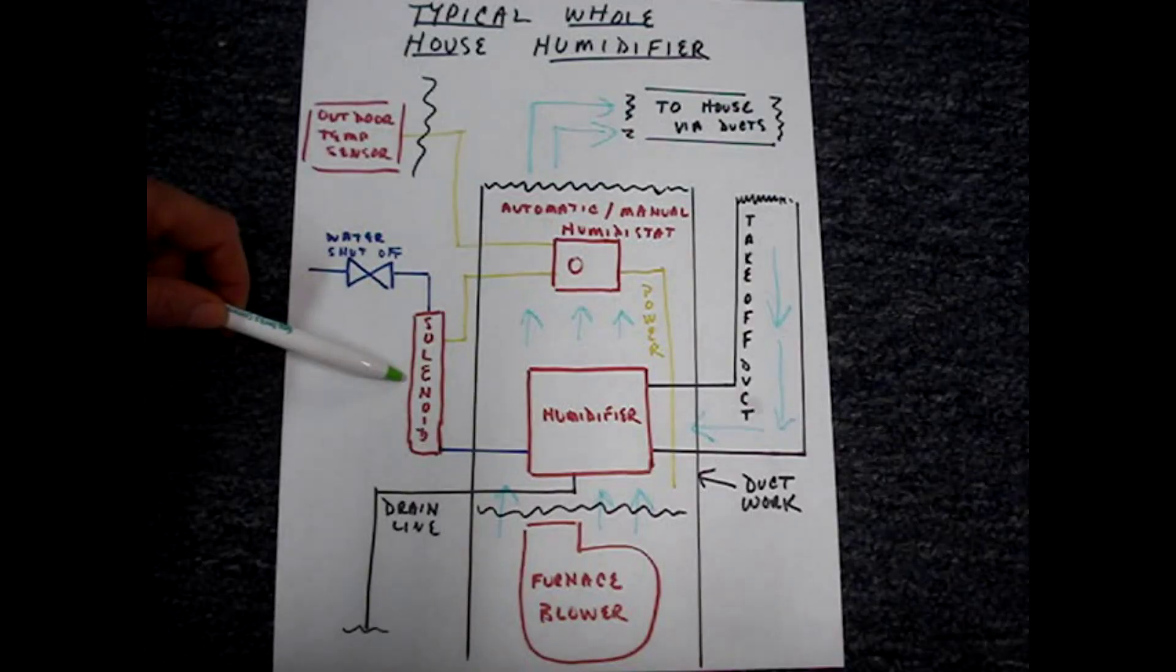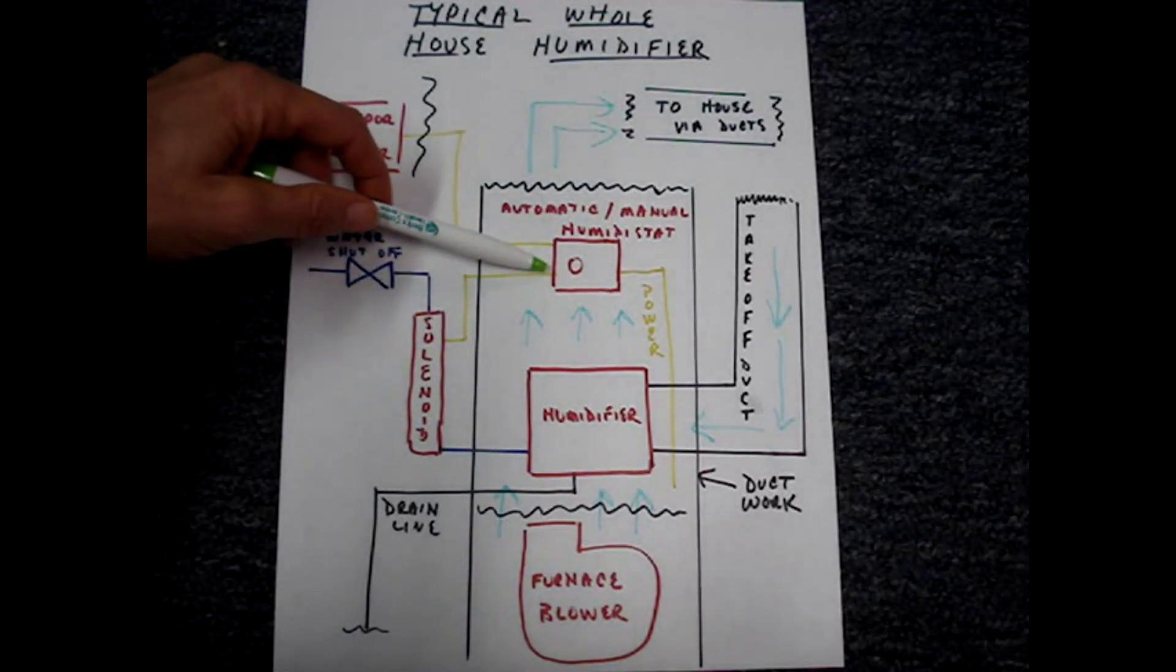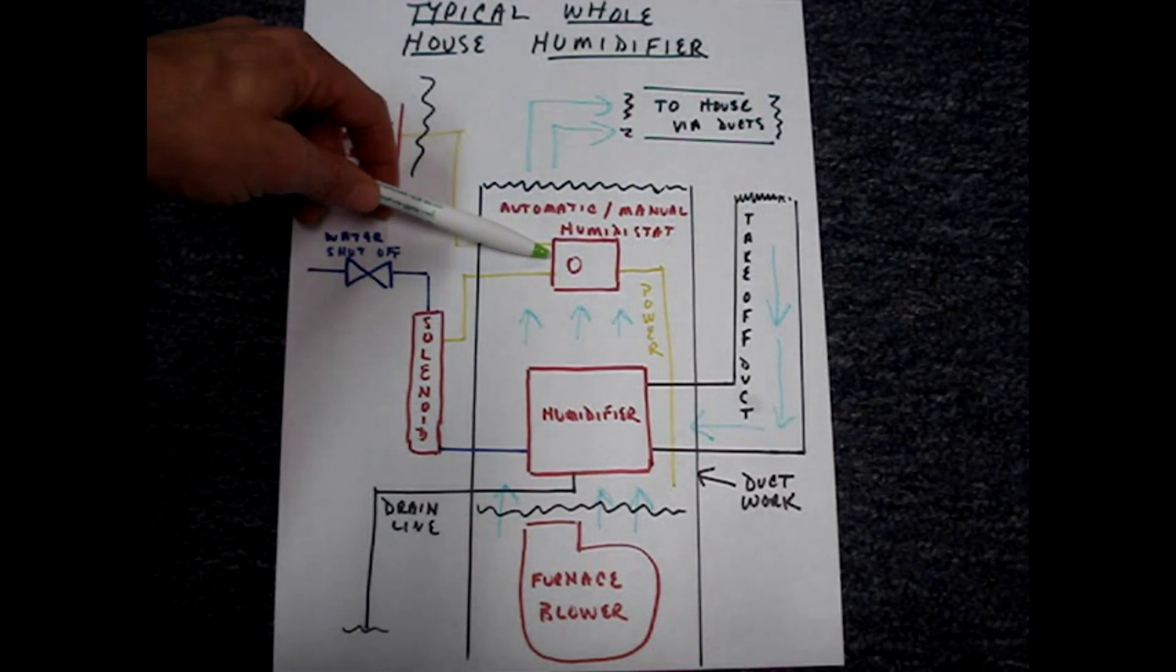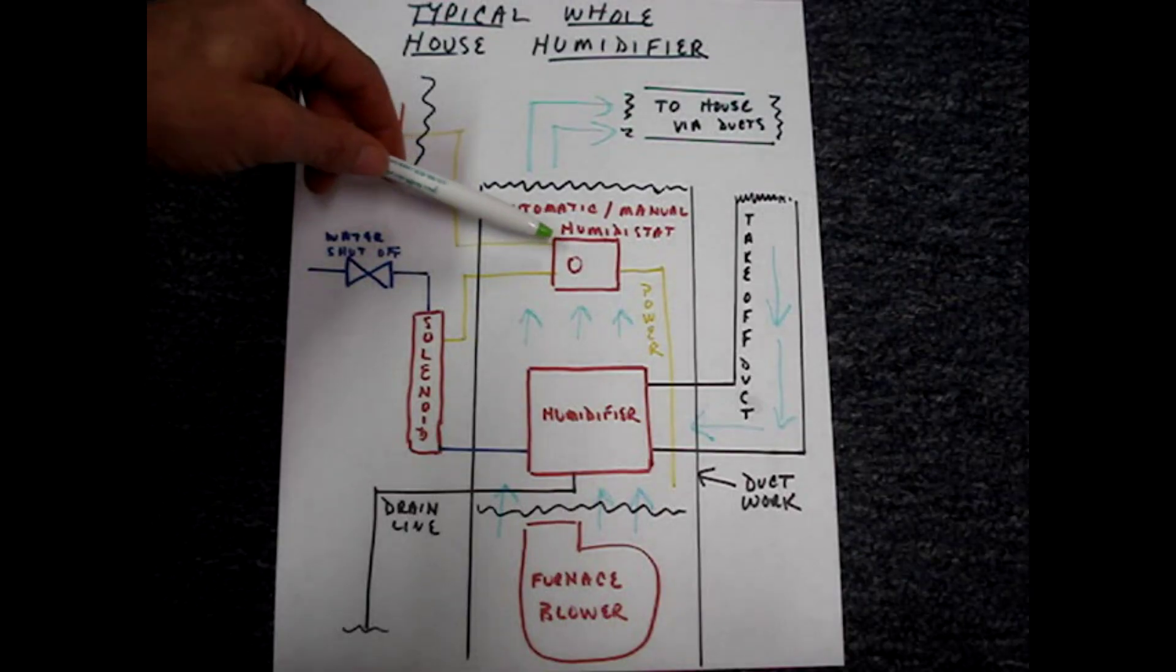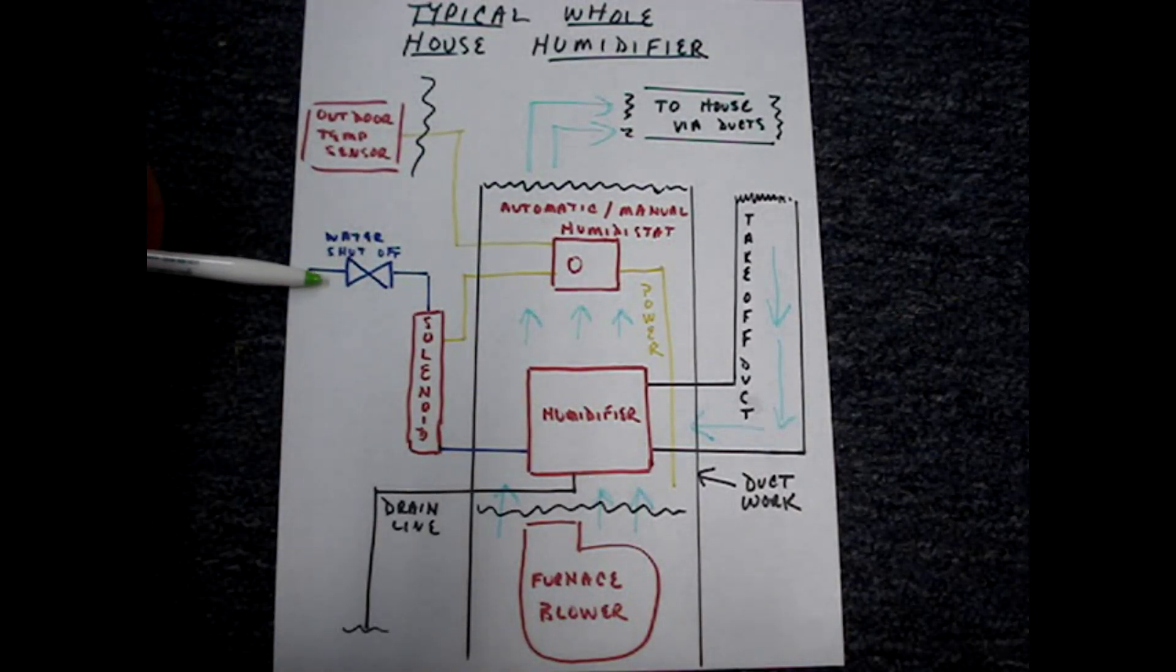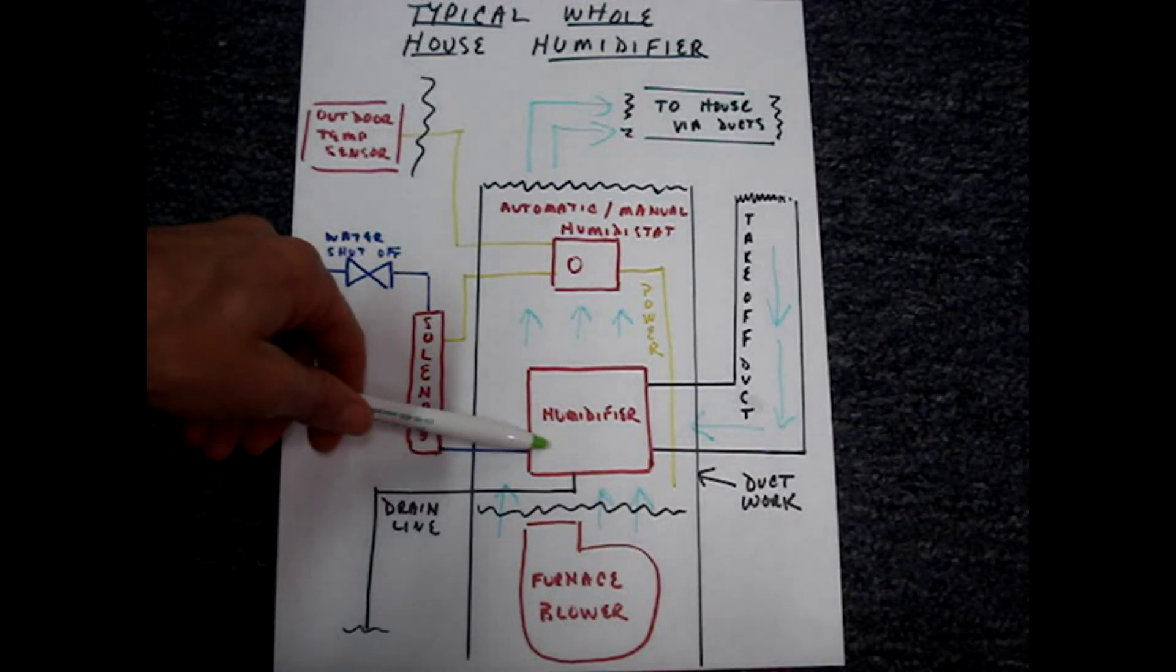The solenoid is an electrically controlled valve that is connected to the humidistat. When the humidistat detects that the humidity level has dropped to its set point, it opens up the solenoid and allows water to flow into the humidifier.